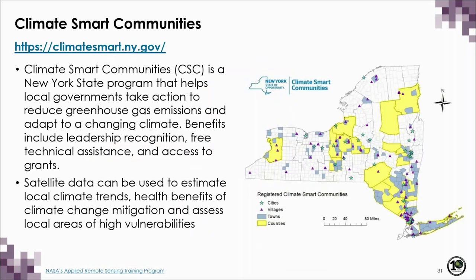Another program we feed into is the Climate Smart Communities Program, which provides incentives and certification to local jurisdictions — counties, cities, or towns — that complete actions towards climate mitigation and adaptation planning. This could be taking action to reduce greenhouse gas emissions or activities to adapt to a changing climate. The benefits from the program include leadership grants, leadership recognition, free technical assistance, and access to grants. Satellite data can be useful for such efforts and the subsequent research results can be applied to estimate local climate trends, health benefits of climate change mitigation, and assess local areas of high vulnerability.